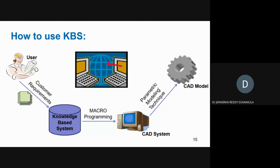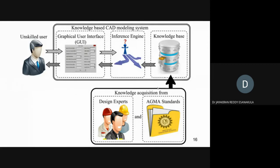This is a more detailed flowchart. The user asks the system through the GUI. The GUI takes the required inputs to the inference engine. In the inference engine, the system understands whether the solution is achievable. If achievable, it goes to the knowledge base. The knowledge base searches for the actual solution, which is a combination of design experts and standards like ISO or AGMA standards.